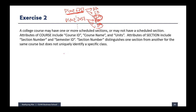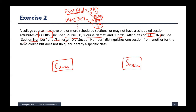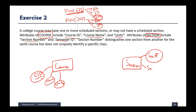Based on that, let's solve this question. We can make course as an entity to store course ID, course name, and units. We can also design section as an entity to store section information, which includes section number and semester ID. So we have the course entity and the section entity. For course, course ID is the primary key with course name and units as attributes. For section, we have section number and semester ID.